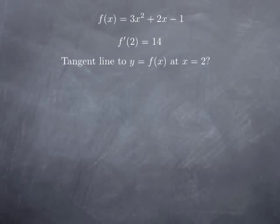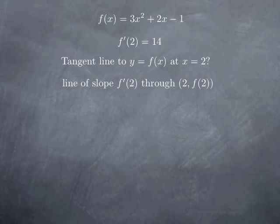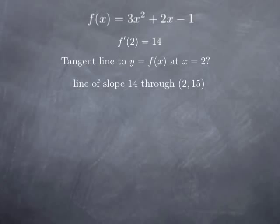Now if the question was to find the tangent line to the graph of this function at x equal to 2, we would have done pretty much all the work. The tangent line is the line of slope f prime of 2 — which we just calculated — through the point with first coordinate 2 and second coordinate f of 2. We plug x equal to 2 in the function and obtain 15. So the tangent line is the line of slope 14 through the point (2, 15), with equation y minus 15 equals 14 times x minus 2.